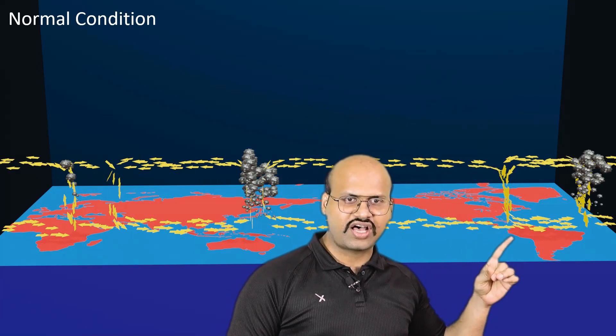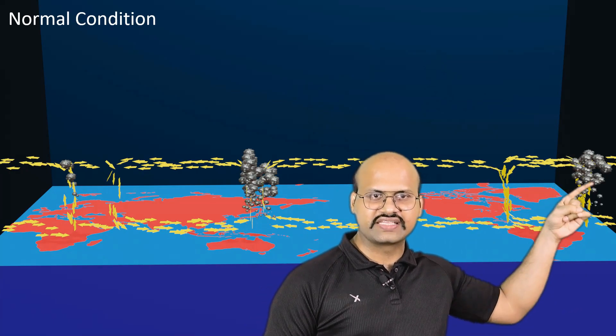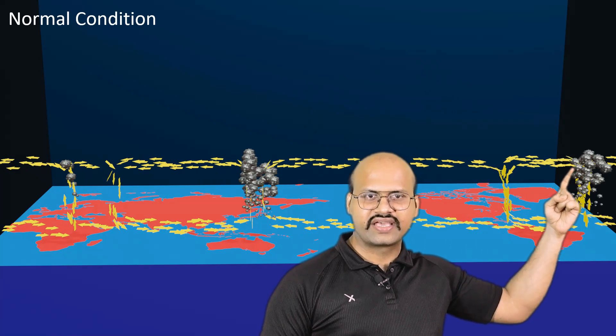This air then travels through the upper troposphere and descends over South America. One branch of this air moves towards the eastern margin of South America, rises up giving a lot of rain in that region, and then comes back and descends over South America again.